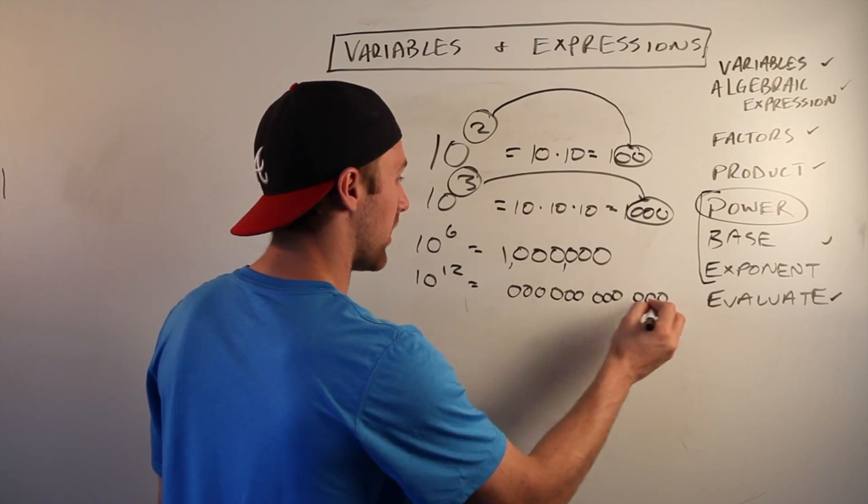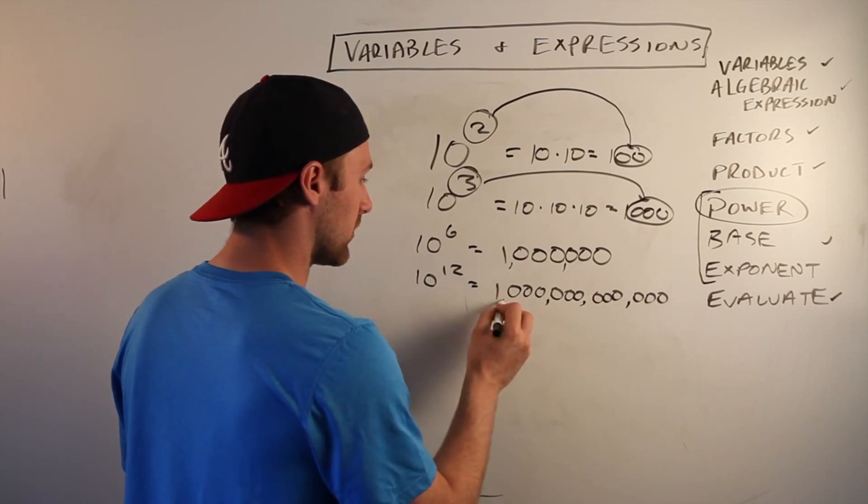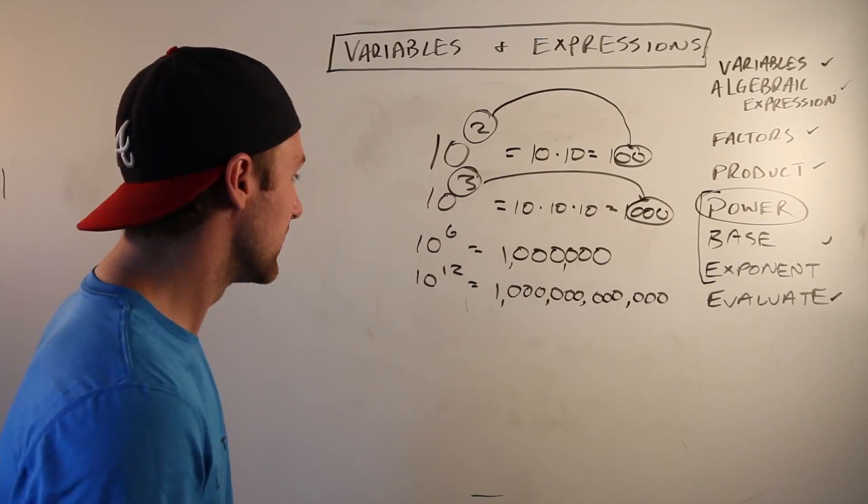Stick a one on the front, put our commas in there for funsies. That's it, that's a shortcut. That's your cheat code on how to get 10 to a power.